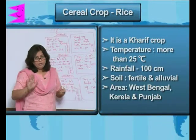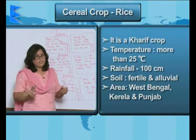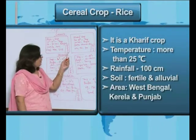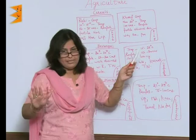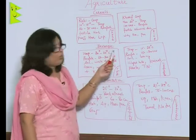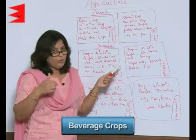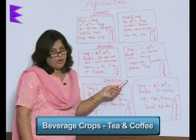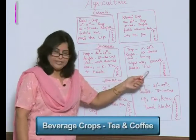I'm sure you have already drawn the first two tables of the cereal crops of India — that is wheat and rice. Just go through it twice and you will never forget it. Let's go to the beverage crop. The two main beverage crops in India are tea and coffee.